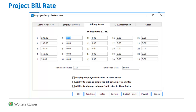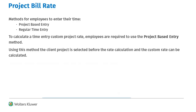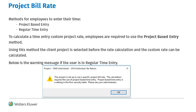In this example, the bill rate number was set to 5. The time entry calculation will use this employee rate number unless it is being overwritten. There are two methods for employees to enter their time: project-based entry and regular time entry. To calculate a time entry custom project rate, employees are required to use the project-based entry method, which is an option in Security Setup. If employees use the regular time entry method that includes a project with a custom rate, a warning message will appear. This warning does not stop the user from saving the transaction, but does indicate a change is needed for entering time.